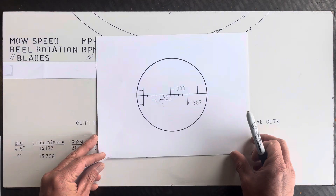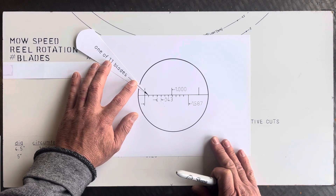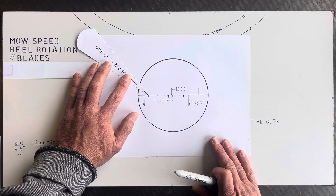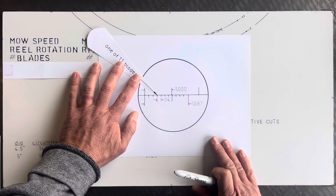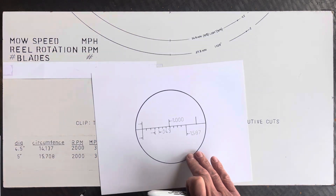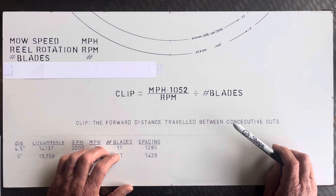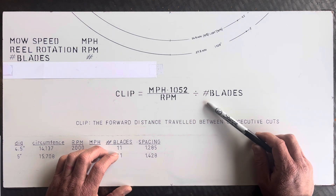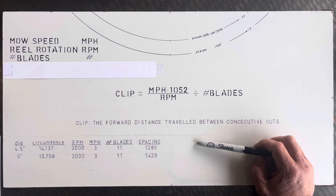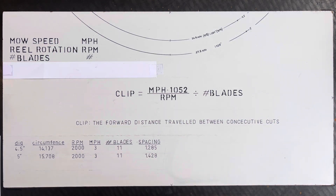Going back to the illustration, each graduation represents one clip, so the distance between one clip and the next is 0.143 inches in this example. As for what the ideal clip is — that's for you to decide, and I'll cover that in a separate video. Another question: does reel diameter affect the clip? I'll address that in a separate video as well.